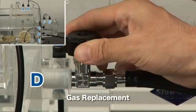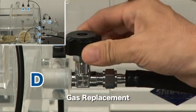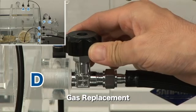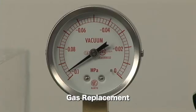In order not to create too much pressure, open the valve little by little and introduce gas slowly. Then, bring it back to atmospheric pressure.